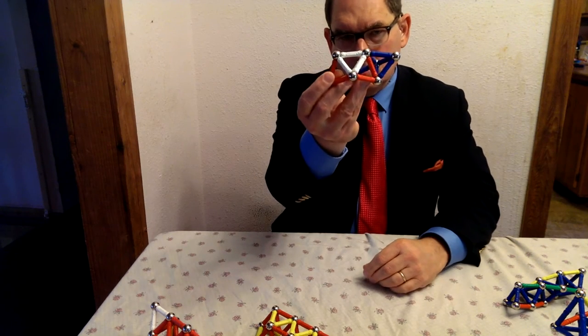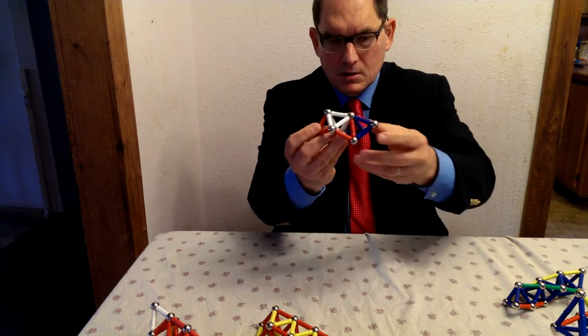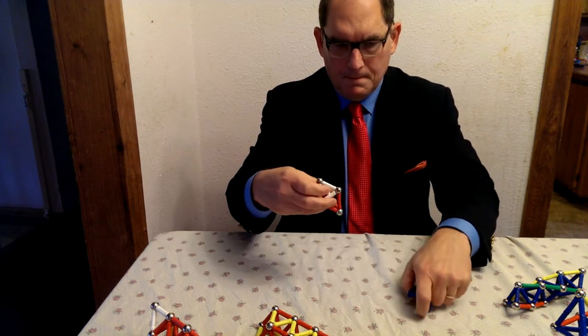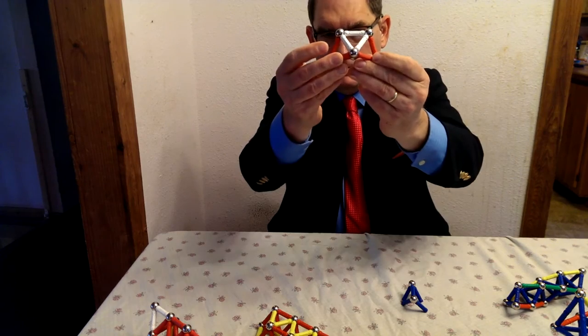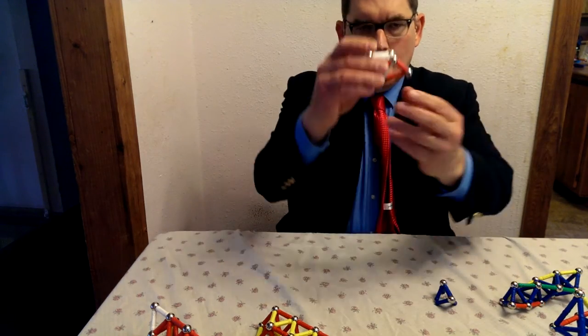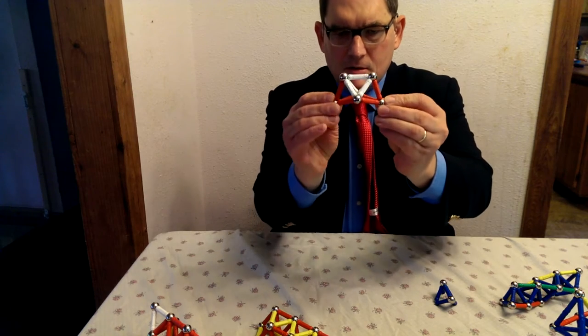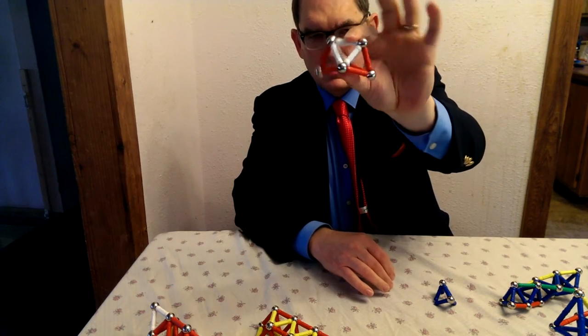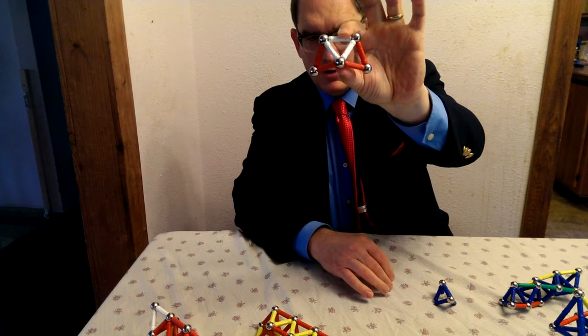But this is not the simplest object. The simplest object is perhaps this object with all of the blue members removed. Like this. So, as it happens, this is a very simple object. It consists of three tetrahedra stuck together, twelve actuators.